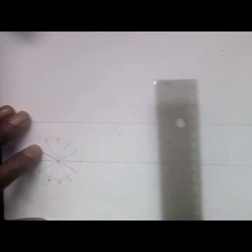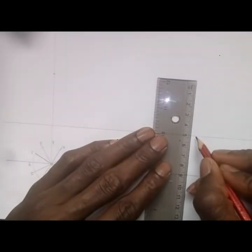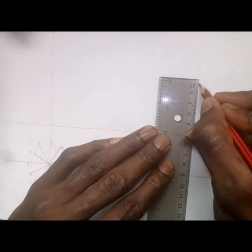Now this point. Then from here, I'll mark another point at 5cm.